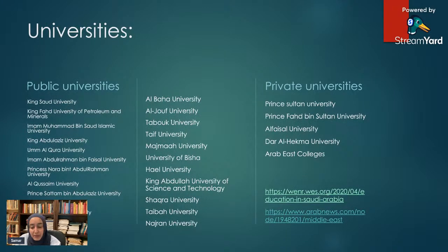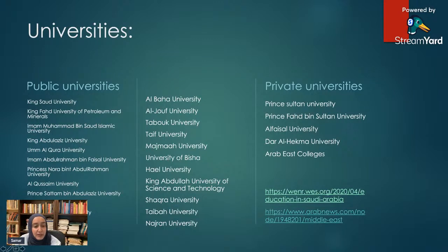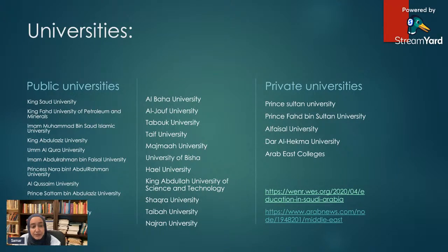In Saudi Arabia we have about 29 public universities and 14 private universities. The ones listed in the slide are those that offer computer science master's degrees, or master's and PhD degrees. We have about 23 of the public universities offering these programs and five of the private universities. Many of these universities and others teach parallel computing for undergrads.